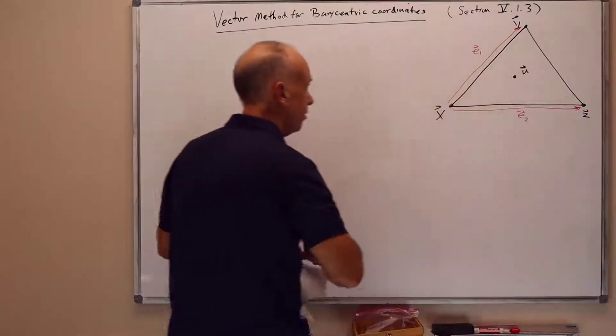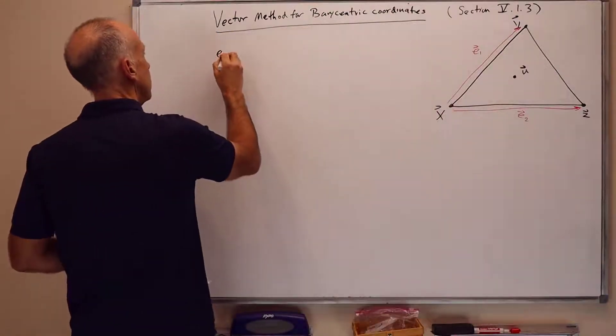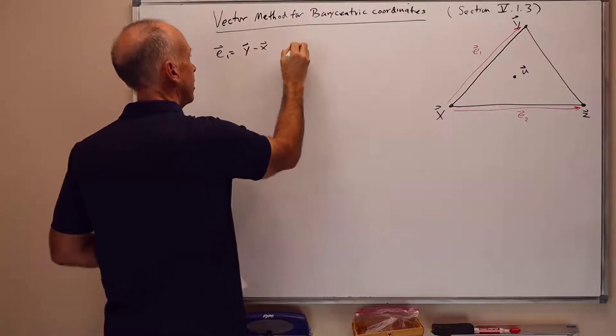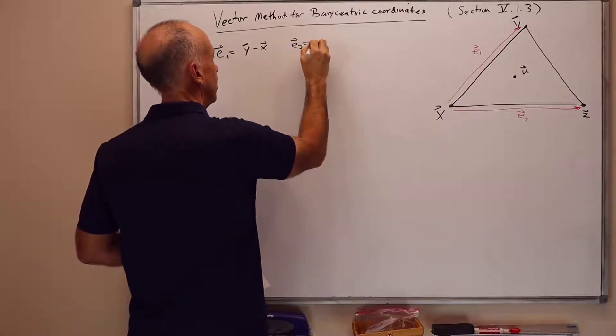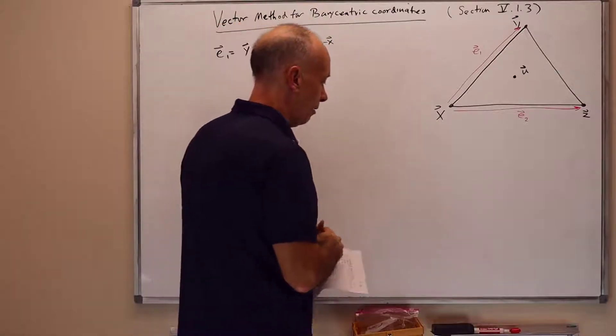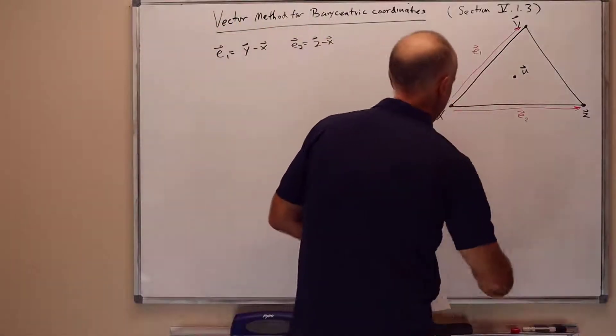And I'll let e1 be the vector from x to y, and e2 be the vector from x to z. So in particular e1 is y minus x, e2 is z minus x.